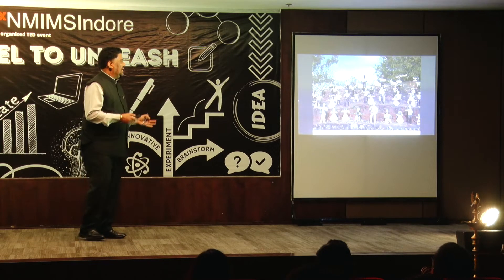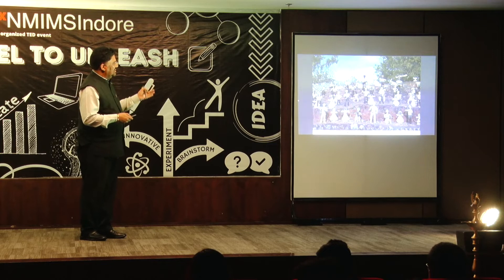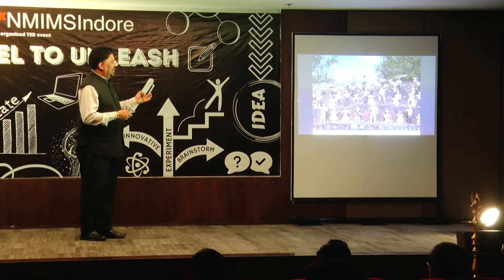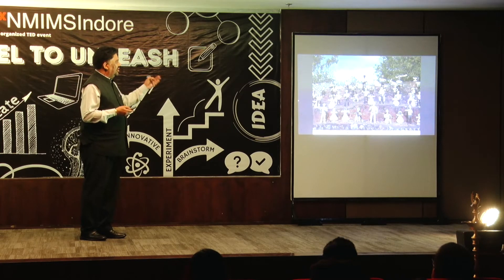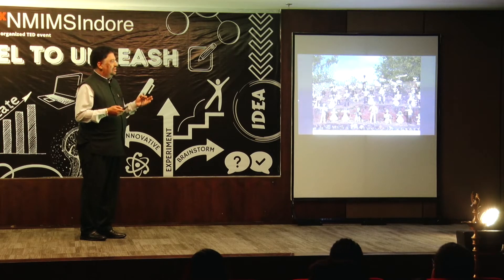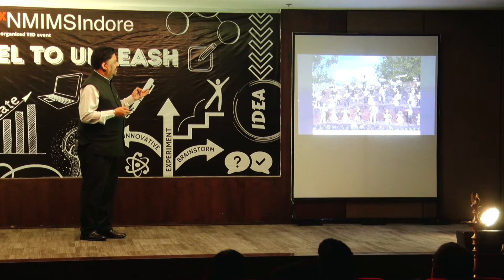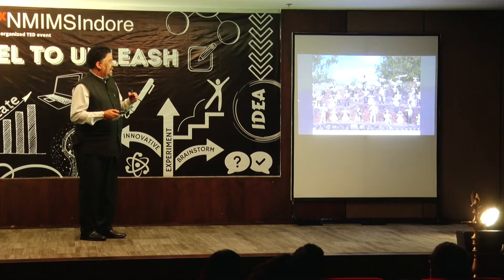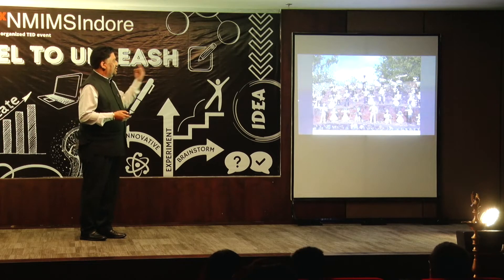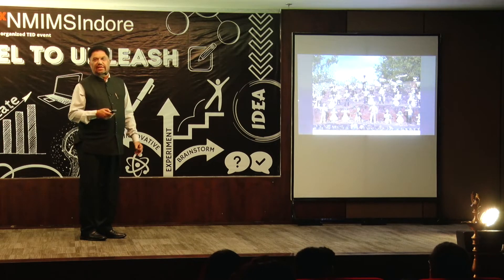The garden has different sections — sculptures and various scenes enacted. It was inspired by a dream Nek Chand had, that there was a king and queen whose kingdom had fallen, and he was trying to recreate that kingdom again.